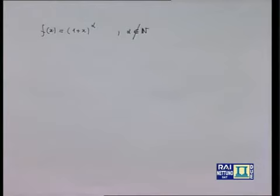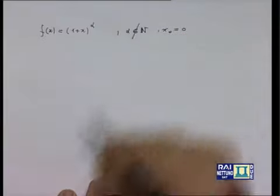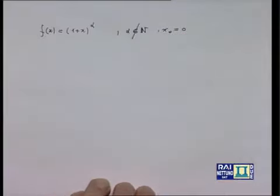Il caso interessante è quello in cui alfa non è un numero naturale, quindi la formula del binomio non è applicabile. Seguendo un'idea di Newton negli anni intorno al 1665, si può cercare di sviluppare questa funzione in una serie, che non a caso si chiamerà serie binomiale. Proviamo a scrivere le derivate successive, prendendo come punto d'appoggio x₀ uguale a 0, quindi ci apprestiamo a scrivere una serie di Maclaurin.